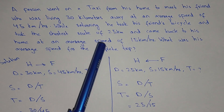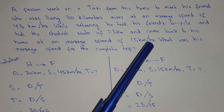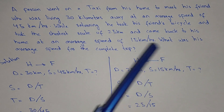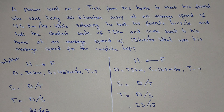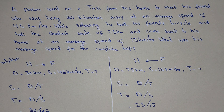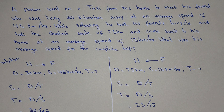He came back to his home at an average speed of 15 kilometers per hour. What was his average speed for the complete trip? We will divide this question into two parts: the first part will be when he was going from his home to his friend, and the second will be when he was coming back from his friend's home back to his home.